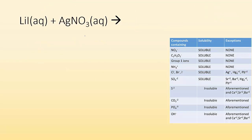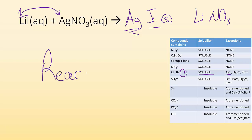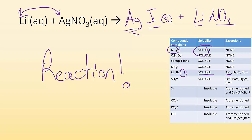What if I had lithium iodide and silver nitrate? Switching partners — swap lithium and silver — I get AgI and LiNO3. I look for Ag or I: I found I⁻, and it's soluble except I have the exception, which tells me AgI is insoluble — it's going to be a solid, so I'm going to get a reaction. Checking LiNO3: nitrate is soluble without exception, so it's aqueous and stays dissolved. Because we get silver iodide as a solid, we definitely get a reaction.